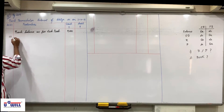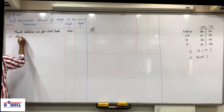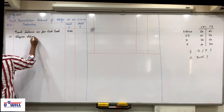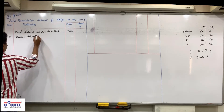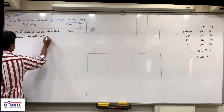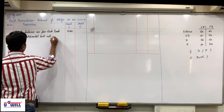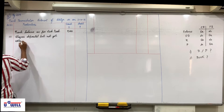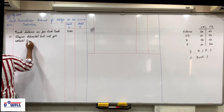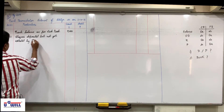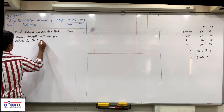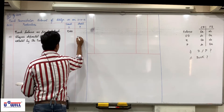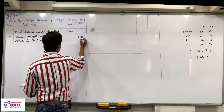First reason: checks deposited but not yet collected by the bank. So 10,000 is not credited in passbook — we will credit it in BRS.